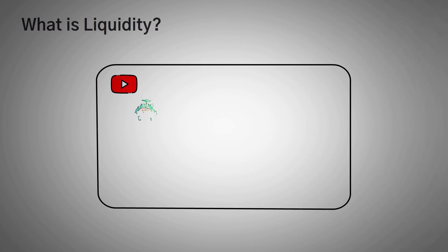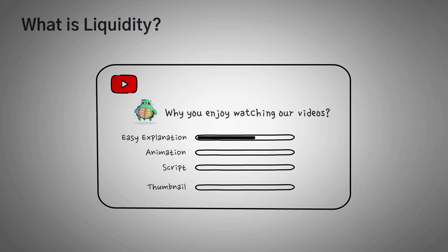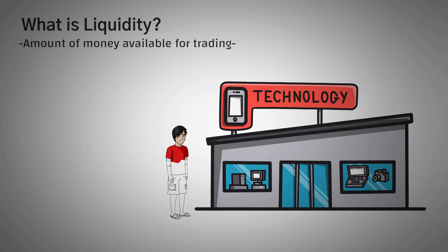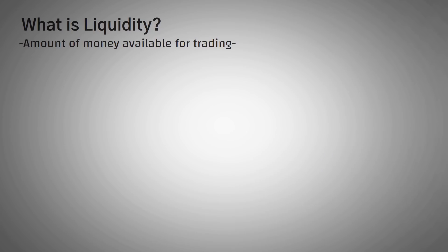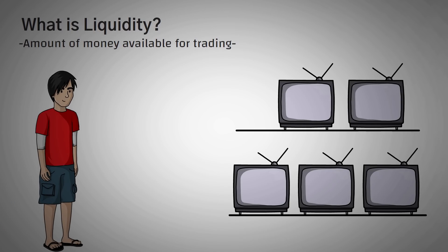Liquidity is the amount of money available for trading. Let's use the example of a pawn shop. You're going to a pawn shop to buy a TV, and you look around and see there are only five different TVs. This means that the pawn shop has five TVs liquid, or that their liquidity is five TVs — they can only sell you a maximum of five TVs.